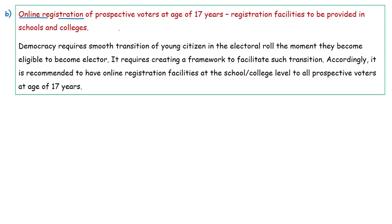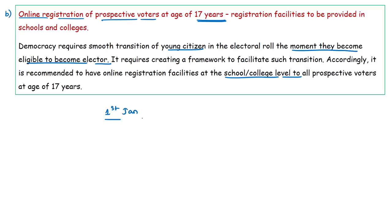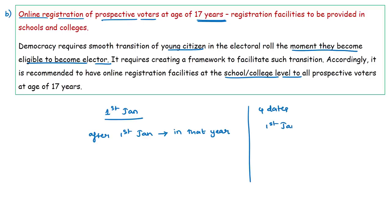The next important recommendation is to provide online registration facilities at schools and colleges so as to register prospective voters at the age of 17 years itself. This ensures that young citizens get enrolled in the electoral list the moment they become eligible — that is, when they complete 18 years of age. At present, January 1st is the qualifying date to calculate eligibility age. As a result, those who attain the age of 18 after January 1st remain ineligible to vote for any election in that particular year. The Election Commission has now recommended four qualifying dates: January 1st, April 1st, July 1st, and October 1st.